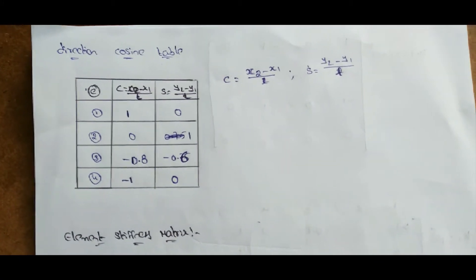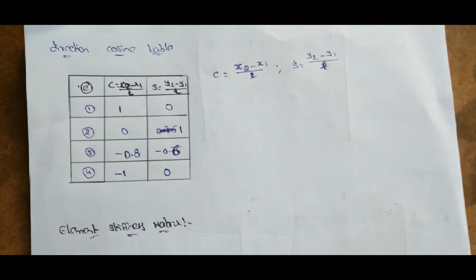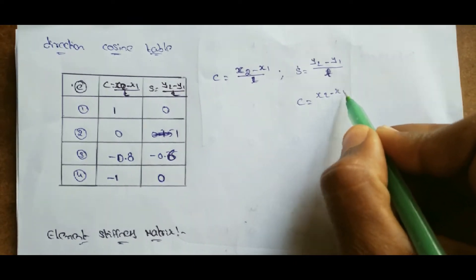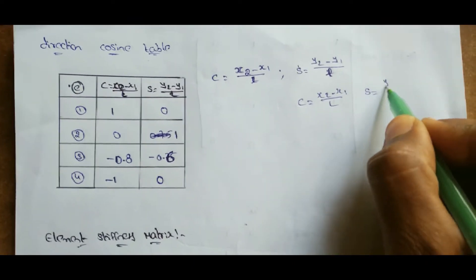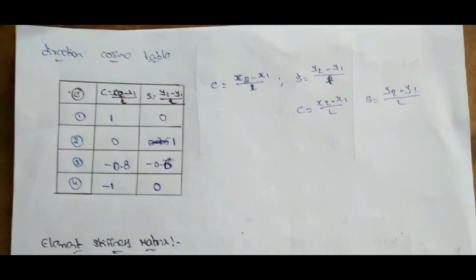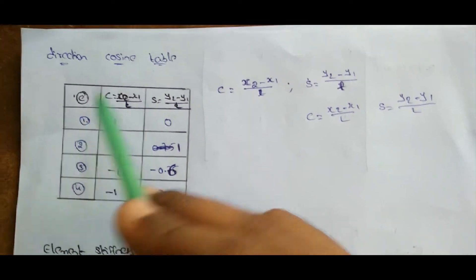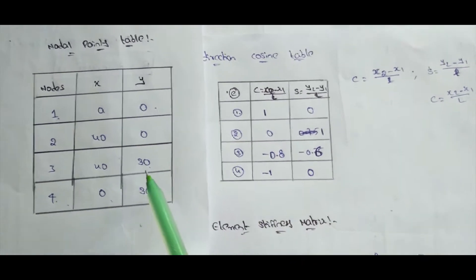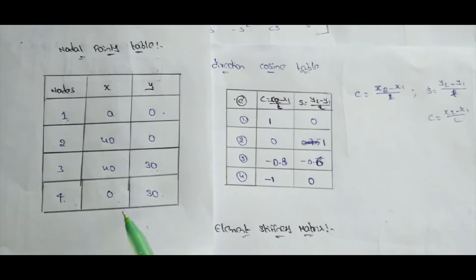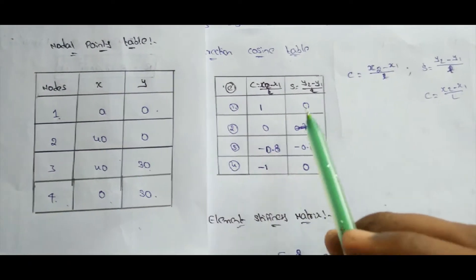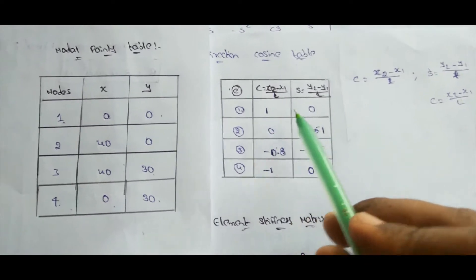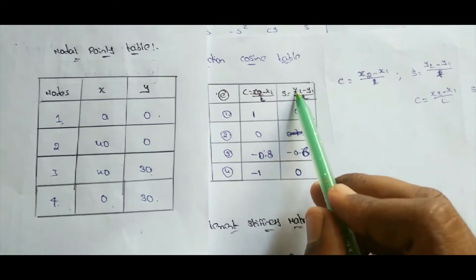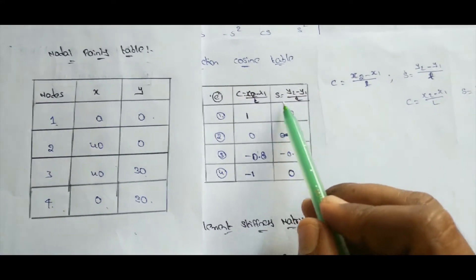The next step is the direction cosine table. In this table, we have to find the C value and S value, where C = (x2 − x1) / L and S = (y2 − y1) / L. This formula you have to remember. You have already written the nodal point table; now prepare the direction cosine table with element number, C, and S.